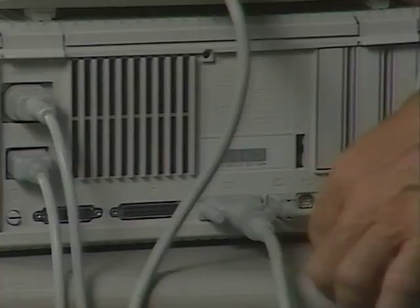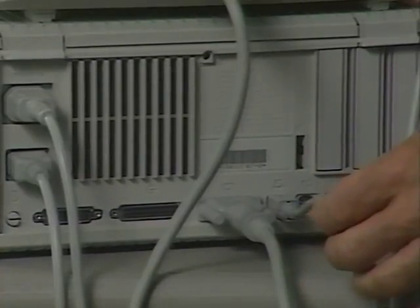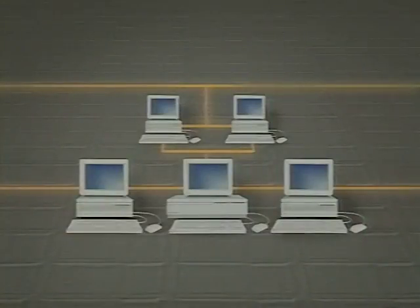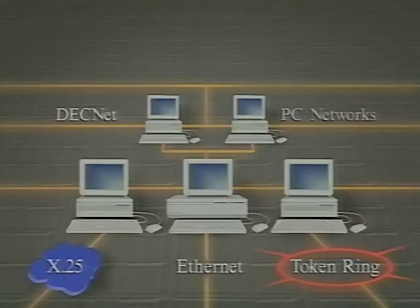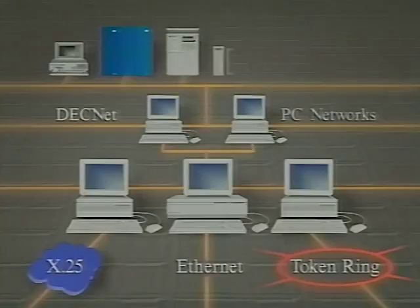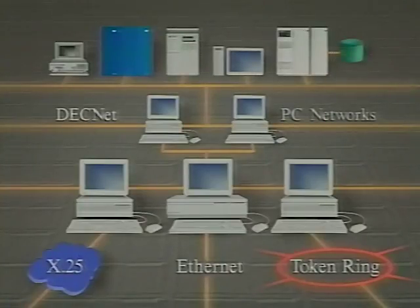Every Macintosh has built-in support for a simple local area network based on AppleTalk. But the network architecture of AppleTalk also supports high performance options — with optional hardware, AppleTalk can run on Ethernet, X.25, or Token Ring. You can use special versions of AppleTalk to connect to DECnet and to PC networks such as Novell, 3Com, or Banyan. To round up the connectivity story, Macintosh connects to IBM PC and mainframe environments, Digital, TCP/IP, and OSI. In short, Macintosh is far more universal than you may have thought possible for a client machine today. From this single desktop, you can connect to dozens of different host computers.